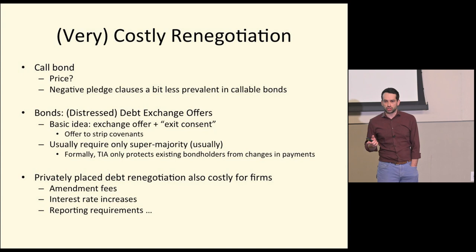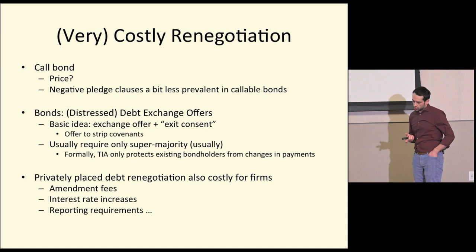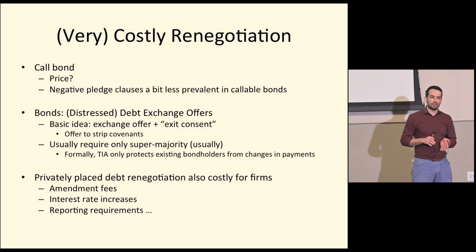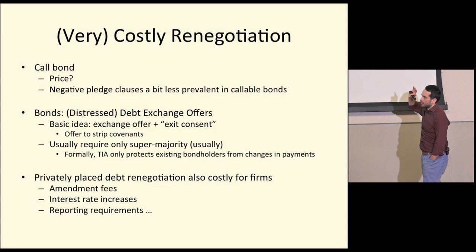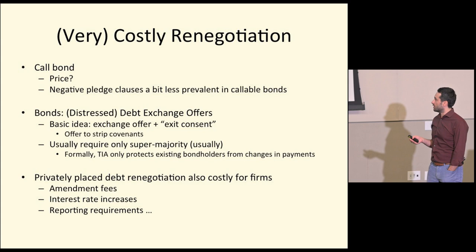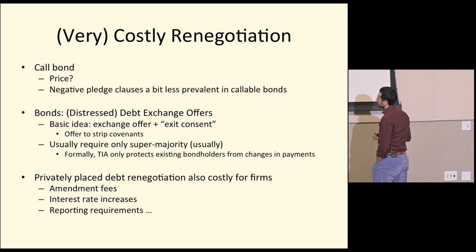Another option — which happens but only in pre-distressed bonds — is a distressed debt exchange offer, where you trade bonds for other bonds and need only a super-majority rather than unanimity. But that's still not a frictionless collective process. So the idea that negative pledge covenants are super efficient to renegotiate is a bit problematic for bonds. You might think this is really a paper about bank debt.